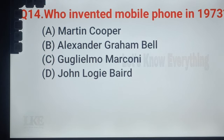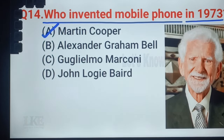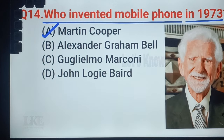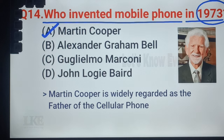Question number 14: who invented the mobile phone in 1973? A. Martin Cooper, B. Alexander Graham Bell, C. Guglielmo Marconi, D. John Logie Baird. The right answer is option A, Martin Cooper. American engineer Martin Cooper first invented the mobile phone or cell phone in 1973. Because of this, Martin Cooper is widely regarded as the father of the cellular phone.